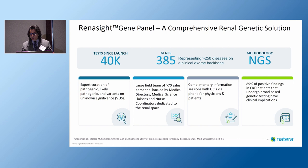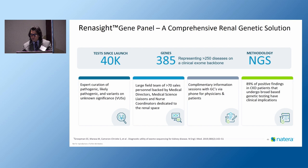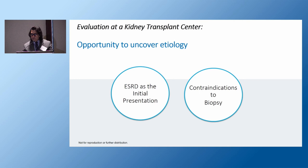We now have a gene panel — the Renocyte — which is an NGS methodology scanning for about 385 genes. Since launch it has had more than 40,000 tests performed. A lot of data is being gathered on these mechanisms of injury. As transplant nephrologists, we have an opportunity to uncover the etiology, since many of our patients may have had end-stage renal disease as their initial manifestation without enough time or ability to uncover the underlying cause — whether due to no time for workup in the ER or contraindications to biopsy.